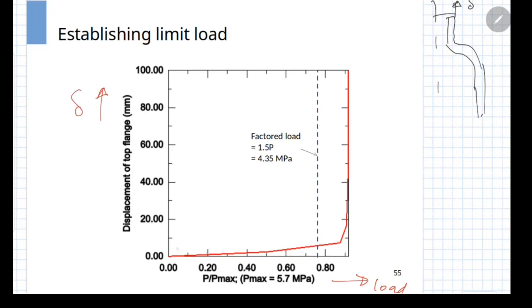As you start increasing the load, your displacements at the top point keep on increasing. At one particular point it starts increasing at very sharp rate, and at certain load value, that is certain value of internal pressure, it becomes extremely high. So that is treated as the non-convergence point or the limit load point.